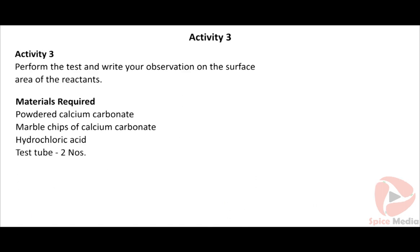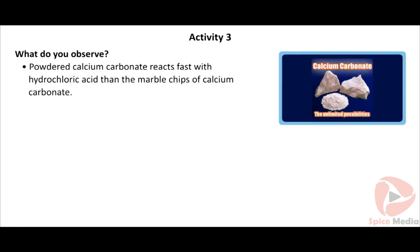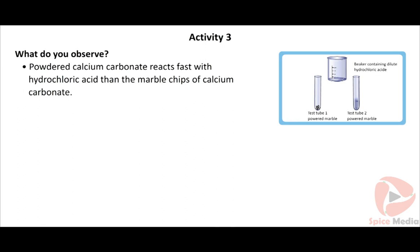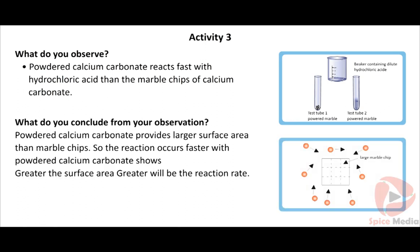Activity 3: Perform the test and write your observation on the surface area of the reactants. Materials required: powdered calcium carbonate, marble chips of calcium carbonate, hydrochloric acid, two test tubes. Procedure: Take marble chips of calcium carbonate in test tube A and powdered calcium carbonate in test tube B. Add hydrochloric acid to both. Powdered calcium carbonate reacts faster with hydrochloric acid than the marble chips. Conclusion: Powdered calcium carbonate provides a larger surface area, so the reaction occurs faster. Greater the surface area, greater will be the reaction rate.